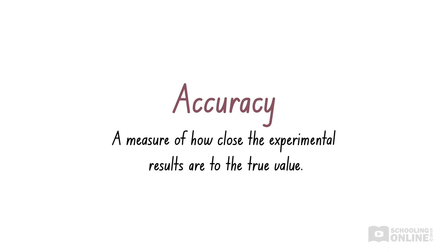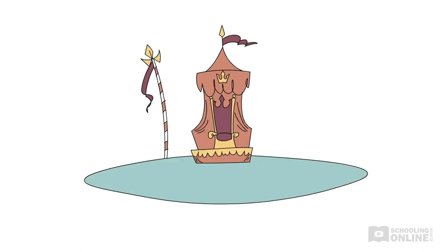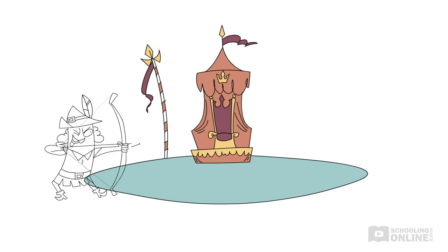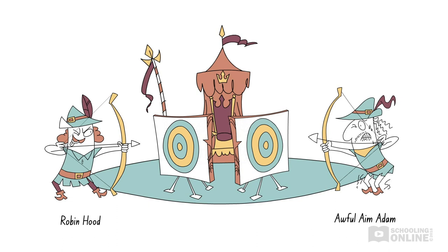But what exactly does this mean? Let's consider this through the example of Robin Hood at an archery competition. Robin Hood and his competitor, Awful Aim Adam, each have three arrows to fire at their targets.